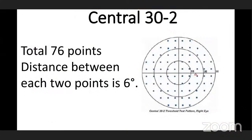Central 30-2: '30' refers to 30 degrees of visual field area from center, and '2' is the offset from the horizontal and vertical meridian. There are a total of 76 points, with a distance of 6 degrees between each point. It is used to test the central area.